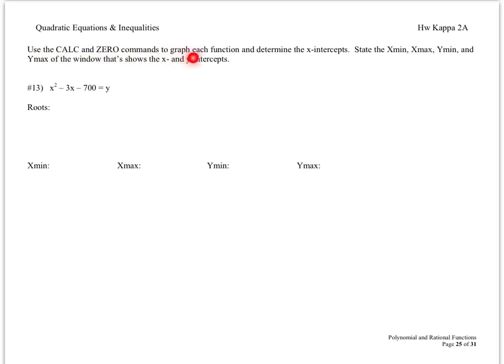Part D: use the calculator zero commands to graph each function and determine the x-intercepts. State the x-min, x-max, y-min, and y-max of the window. For this graph, the window I chose was x: negative 30 to positive 30, and y: negative 800 to positive 800. This is not the only window that would work. Asking the calculator for the roots, I got negative 25 and positive 28.